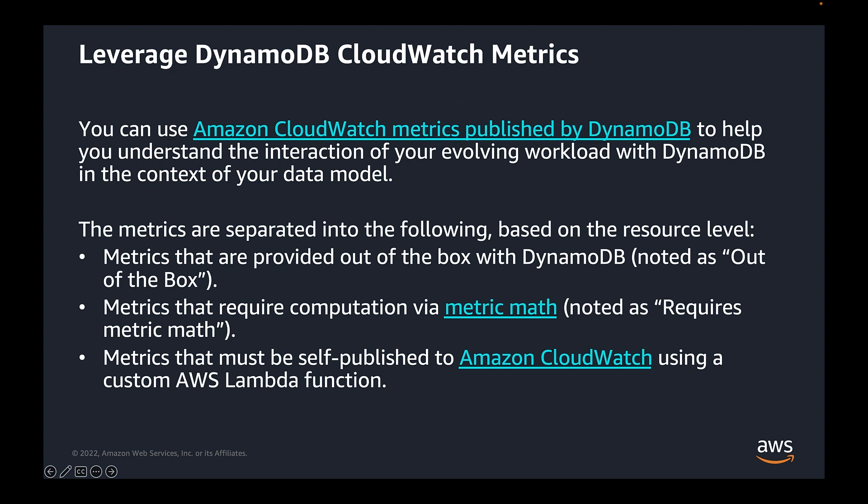You can use Amazon CloudWatch metrics published by DynamoDB to help you understand the interaction of your evolving workload with DynamoDB in the context of your data model. The metrics are separated into the following based on resource level: metrics provided out of the box with DynamoDB, metrics that require computation via metric math, and finally metrics that must be self-published to Amazon CloudWatch using a custom AWS Lambda function.